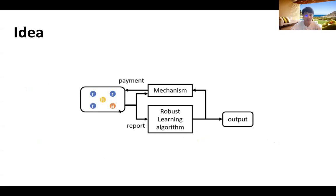We are given crowds of both rational and adversarial agents. Our idea is to first use a robust learning algorithm to get rid of the influence of the adversarial agents, and use the cleaned output to design truthful mechanisms, such that the rational agents can be properly incentivized.